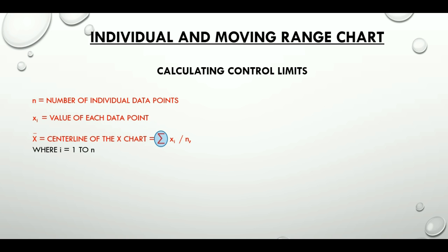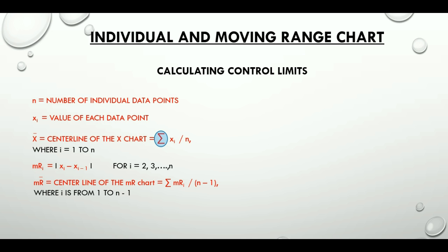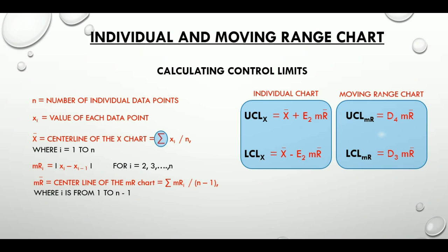The summation notation sums up all different values of a random variable X. Moving range, or MR, for the i-th item is the absolute value of the difference between each measurement and the previous one. The center line of the moving range chart is the summation of MRi divided by N-1 — N-1 because the moving range chart has one data point less than the individual chart. Here are the formulas used to calculate the upper control limit and lower control limit for individual charts and for moving range charts, where E2, D3, and D4 are control chart constants with table values. We can get those values from available tables for control chart constants corresponding to the sample size we have.